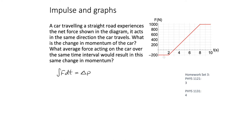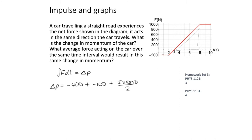The change in momentum equals the area under the force-time graph. The rectangle from 0 to 2 seconds at −200 Newtons gives −400 N·s. The triangle from 2 to 3 seconds with height −200 gives −100 N·s. The large triangle from 3 to 8 seconds with height 1000 and length 5 gives +2500 N·s. The rectangle from 8 to 10 seconds at 1000 Newtons gives +2000 N·s.